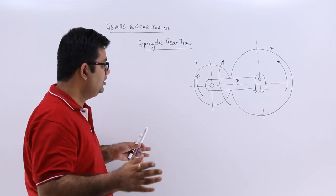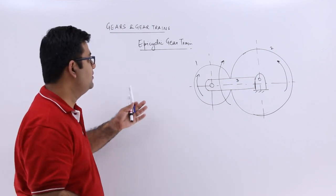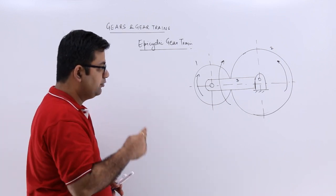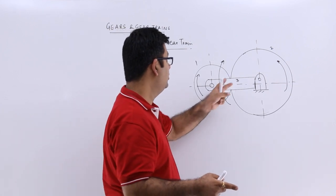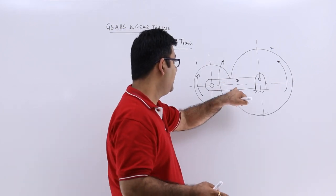It has multiple components. Now what do we understand by epicyclic gear train? So if you look at this, there are three components in this. You have 1, 2 and 3. So you have two gears and one arm.